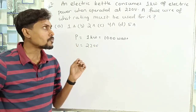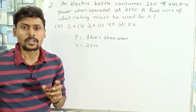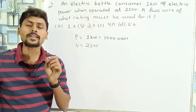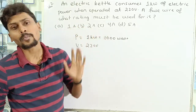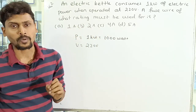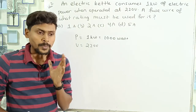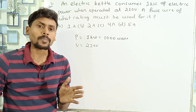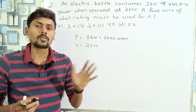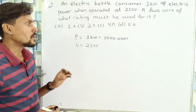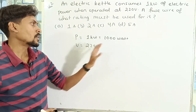A fuse of what rating must be used? You have 4 options and you have to choose the correct one. A fuse protects the electric appliance from large current flow. The kettle consumes 1 kW, which is 1000 W, and the operating voltage is 220V.